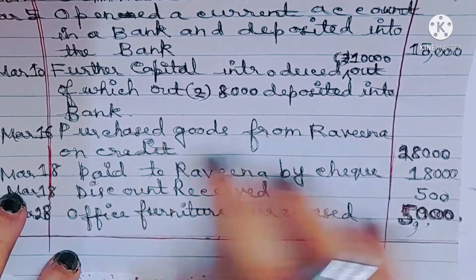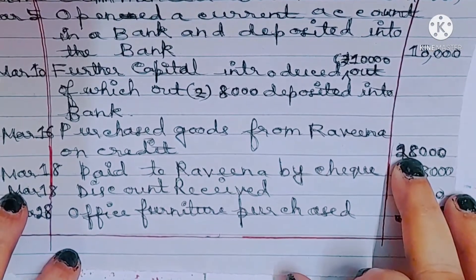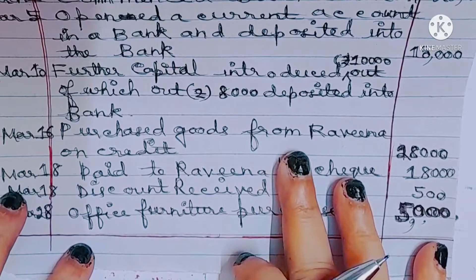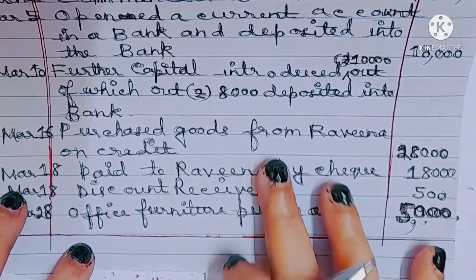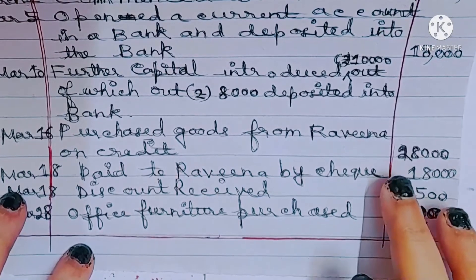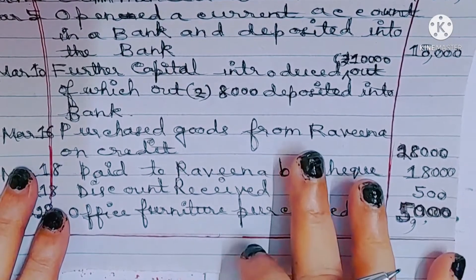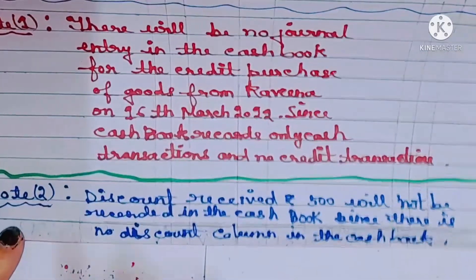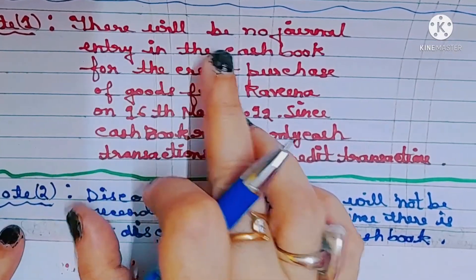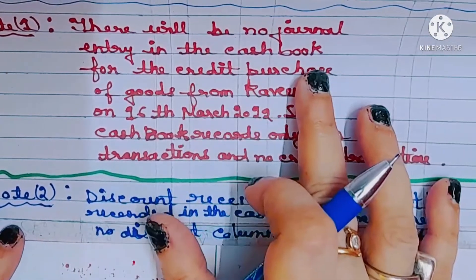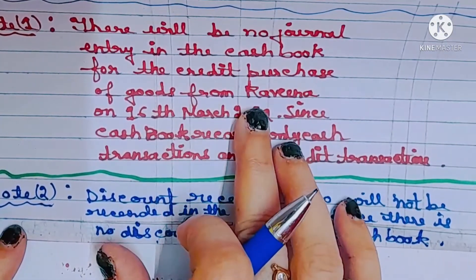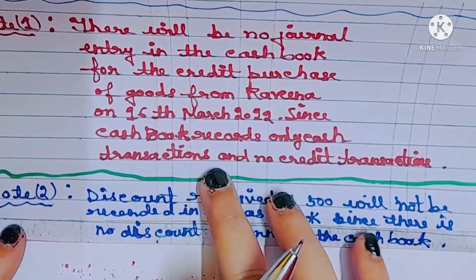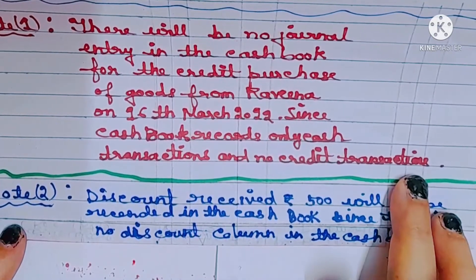On 16th March, goods were purchased from Raveena on credit for 28,000. This will not appear in the cash book because the cash book — single, double, or triple column — does not record credit transactions. We will write a short note below the cash book: Note 1 — there will be no entry in the cash book for the credit purchase of goods from Raveena on 16th March 2022, since the cash book records only cash transactions.